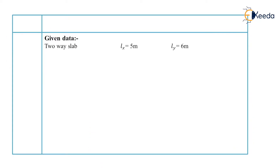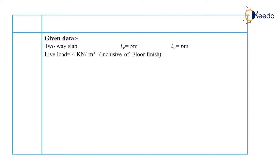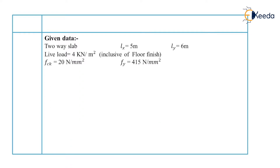Here is the given data. A two-way slab of 5 meter by 6 meter dimension is given, meaning Lx equals 5 meter and Ly equals 6 meter. Live load inclusive of floor finish is 4 kN per meter square. Fck is 20 N per mm square and Fy is 415 N per mm square.